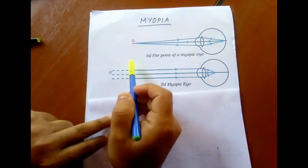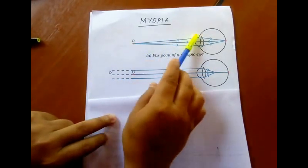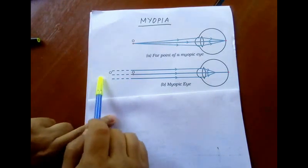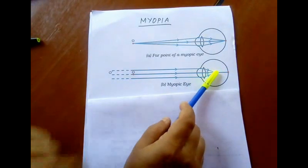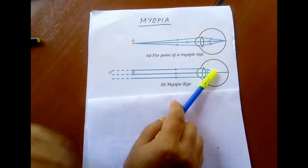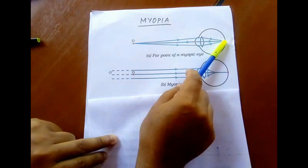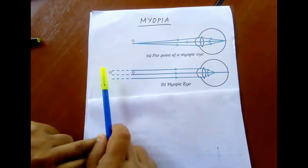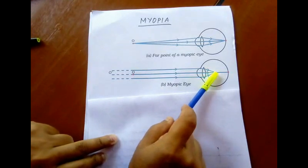Now let's study myopia in detail. In a myopic eye, if an object is nearby it will be focused at the retina and seen distinctly. But if the object is situated far away, the rays are not focused at the retina — they are focused somewhere in front of the retina. As a result you will see a blurred image. So a myopic eye can see nearby objects clearly but cannot see distant objects clearly.